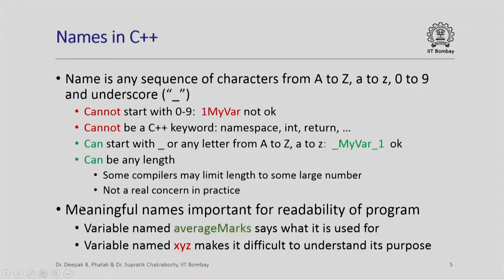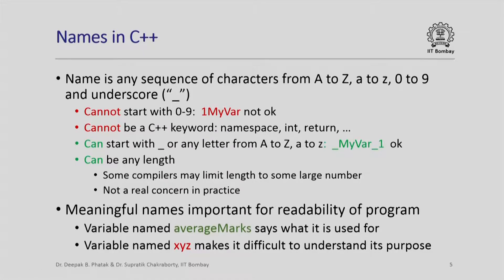It is very important to assign meaningful names to whatever objects you are using in a program, and the importance of this is very high if you want your program to be readable. For example, in a big 1000-line program, if I have a variable named 'average_marks', just the name of the variable tells me what this variable is going to be used for — it is going to be used to store the average of some marks. Whereas if instead I had a variable named x, y, or z, then it becomes very difficult to understand its purpose, and one has to look at the various places where this variable is used in order to figure out what it is being used for.